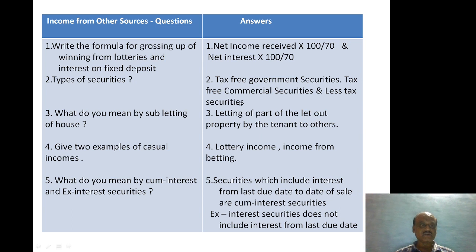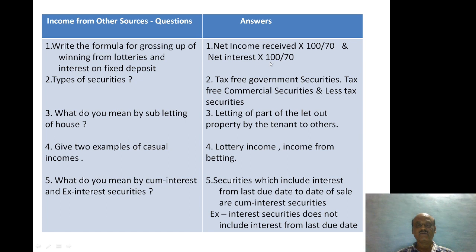The first question is: write the formula for grossing up of winnings from lotteries and interest on fixed deposits. The formula is: for lottery income — net amount received from lottery multiplied by 100, divided by 70. For interest on fixed deposits — net interest multiplied by 100, divided by 90.